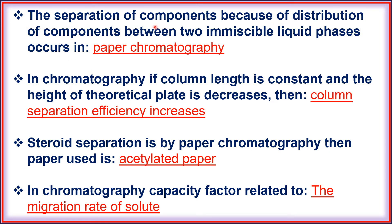The separation of components because of the distribution of components between two immiscible liquid phases occurs in paper chromatography. In chromatography, if the column length is constant and the height of the theoretical plate is decreased, then column separation efficiency increases.